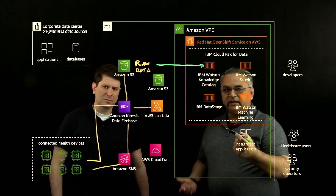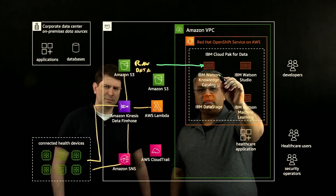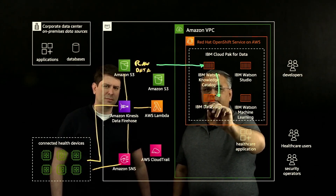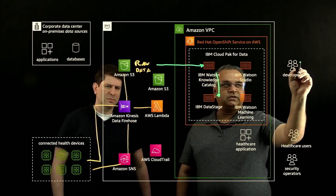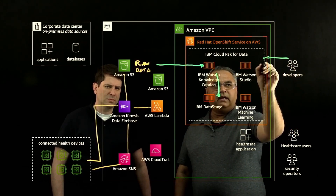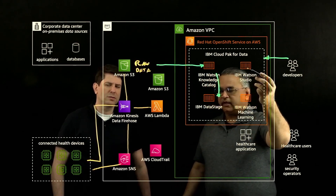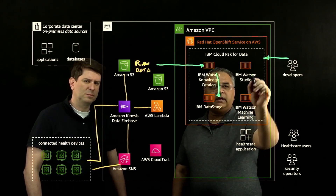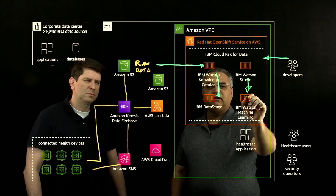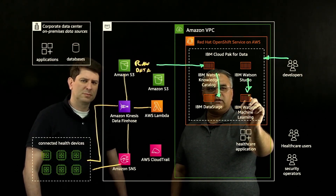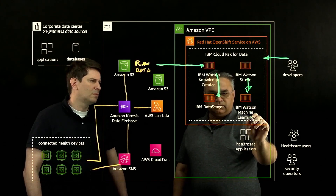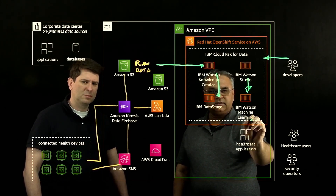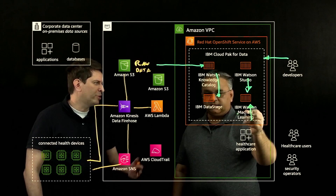DataStage is an ETL tool, and these two can work in concert — Watson Knowledge Catalog and DataStage — to pull the right data. Developers here can build models using IBM Watson Studio. These are AI models. Once those models are built, they can be deployed using Watson Studio into Watson Machine Learning. Watson Machine Learning will deploy those models and generate inference endpoints. Those endpoints will then be used by healthcare applications to make predictions.